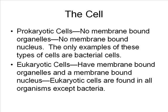Now let's talk about cells. On earth there are two basic types of cells: prokaryotic and eukaryotic. Prokaryotic cells are thought to be the most simple type of cells on earth today. These cells have no membrane-bound nucleus and no membrane-bound organelles — they are simple cells. The only examples of organisms with prokaryotic cells on earth today are bacteria.